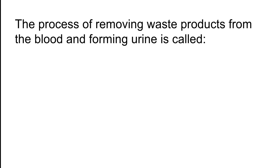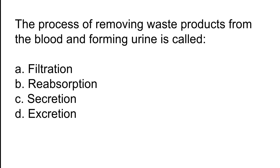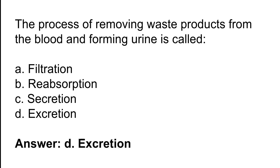The process of removing waste products from the blood and forming urine is called? Options: A) Filtration, B) Reabsorption, C) Secretion, D) Excretion. The correct answer is option D. The process of removing waste products from the blood and forming urine is called excretion.